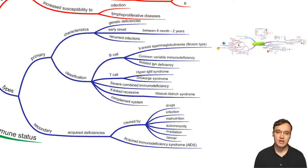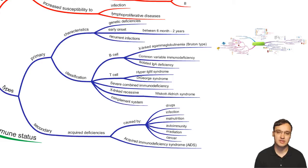Primary ones have early onset, between six months and two years. These are babies with recurrent infections. There are different types of primary — those with B cell defect, those with T cell defect, those with other types of defects like in the complement system. Looking at the mind map, Bruton's X-linked agammaglobulinemia is part of the B cell defect.